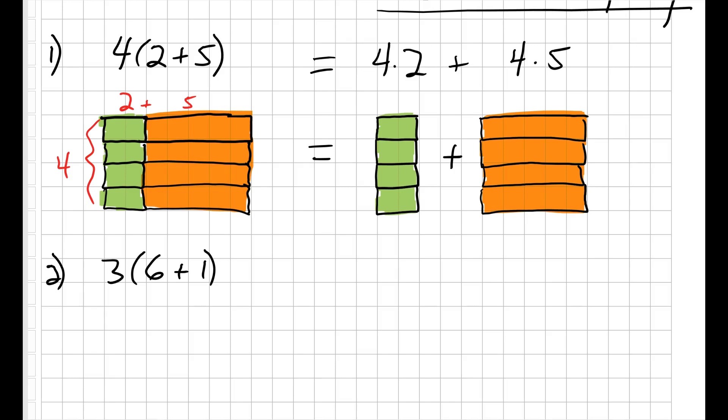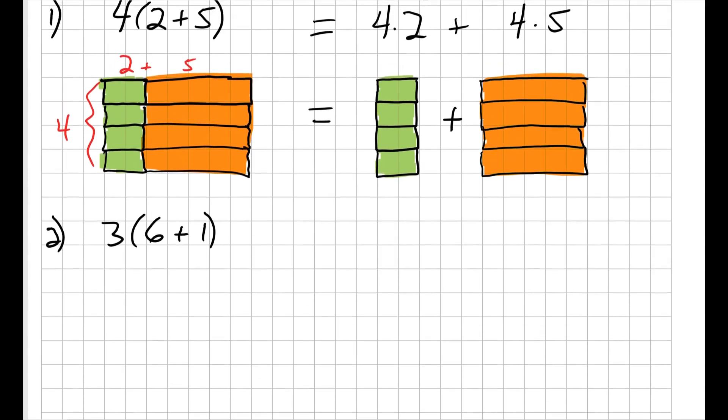Okay, so for this one I'm going to do the calculation first and then draw the boxes second. It doesn't really matter which one you do first as long as your pictures match your distributive property expression. According to the distributive property, 3 times 6 plus 1 equals 3 times 6 plus 3 times 1. And to model the left side of my distributive property, I'm going to need 3 groups of 6 plus 1. So let's draw that.